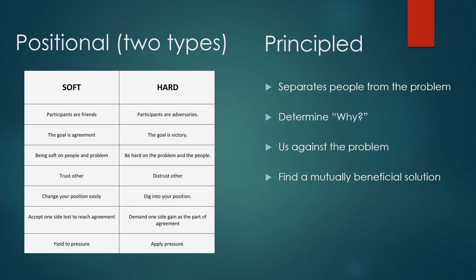One of the core tenets from Getting to Yes by William Urie and Roger Fisher is the distinction between positional and principled negotiation.